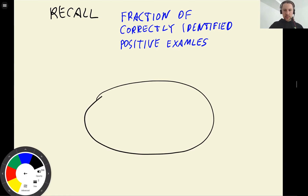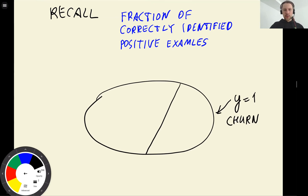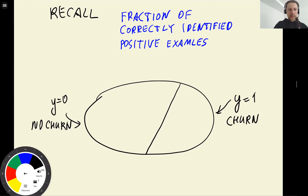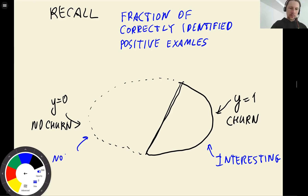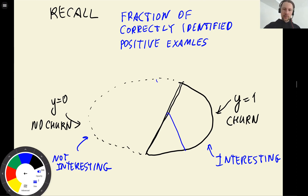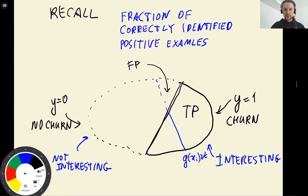Let me draw all the customers again. We look at customers who are actually going to churn — our y equals one. These are the churning customers, and y equals zero are the non-churning customers. We are interested only in the churning part. Of course, among all churning users, some of them we managed to correctly identify — where our predictions are above the threshold — and these become true positives. The ones we missed become false negatives. For recall we are interested in false negatives, not false positives.